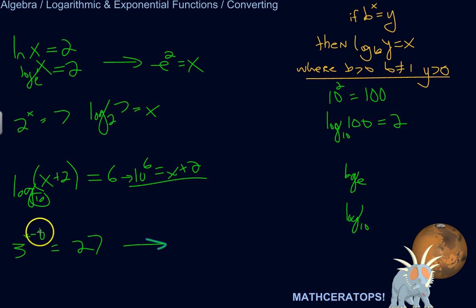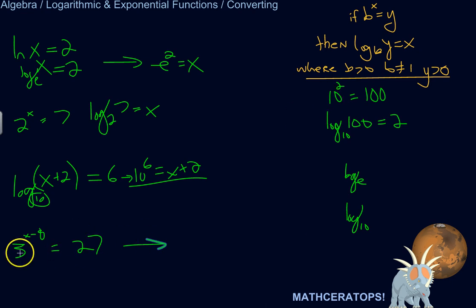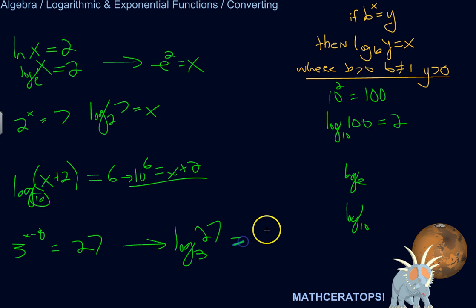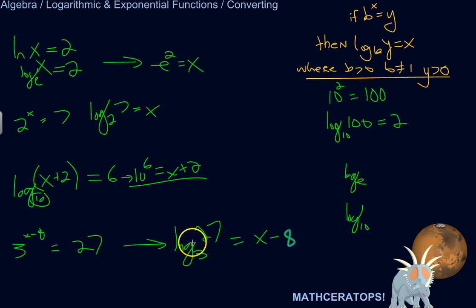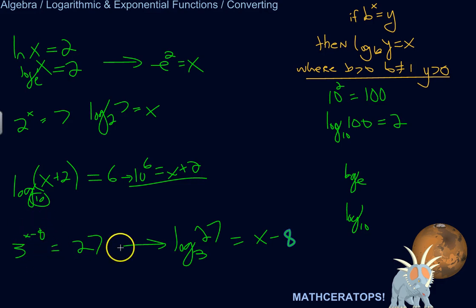3 to the power of (x minus 8) equals 27. That's equivalent to log base 3 of 27 equals x minus 8. Log is asking the question: to what power do I have to raise 3 to get it to become 27? And the answer is x minus 8. So 3 raised to the power of (x minus 8) equals 27 — see how it goes both ways.